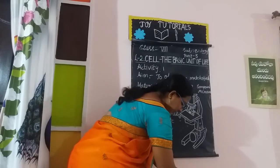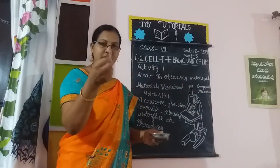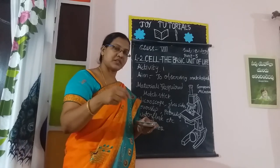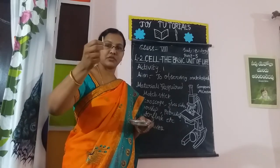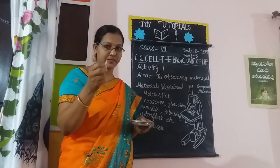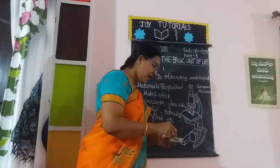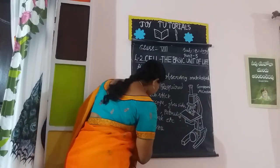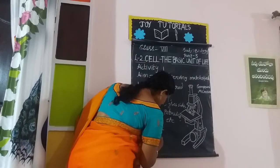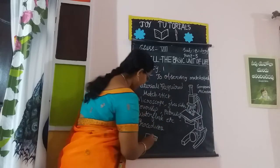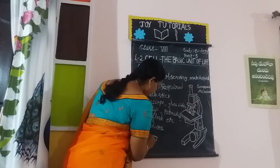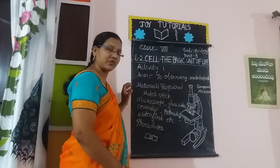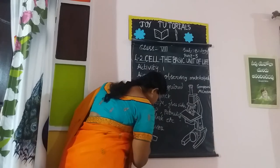We have to take a matchstick, soak it in a petri dish with some water. We have to soak it for half an hour. After half an hour, we have to take a small thin portion of it. That thin portion we have to place on a glass slide, cover it with a cover sleeve, and observe it under a microscope. Whatever we are observing, we have to draw diagrams in our notebooks.